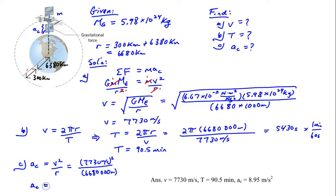When you plug that into your calculator, I believe you'll get 8.95 meters per second squared. So this is really the acceleration due to gravity at that point. It's obviously less than 9.8 on the surface of the Earth. And that's it for this example.